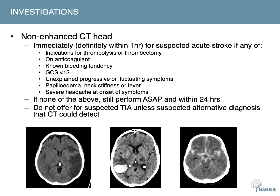Indications for immediate CT include: indications for thrombolysis or thrombectomy; the patient is taking anticoagulants or has a known bleeding tendency; a GCS score of less than 13; unexplained progressive or fluctuating symptoms; papilledema, neck stiffness or fever; or a severe headache at the onset of symptoms. If there are no such indications for immediate imaging, CT should still be performed as soon as possible and definitely within 24 hours.